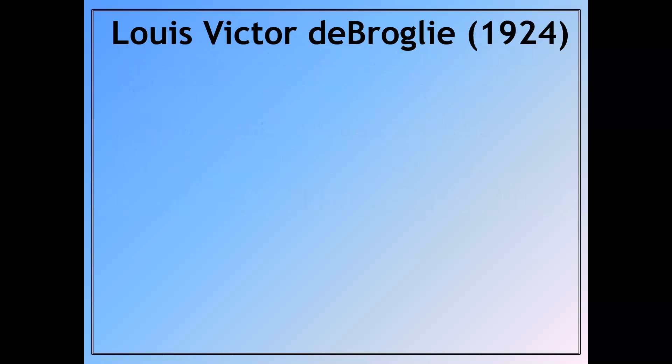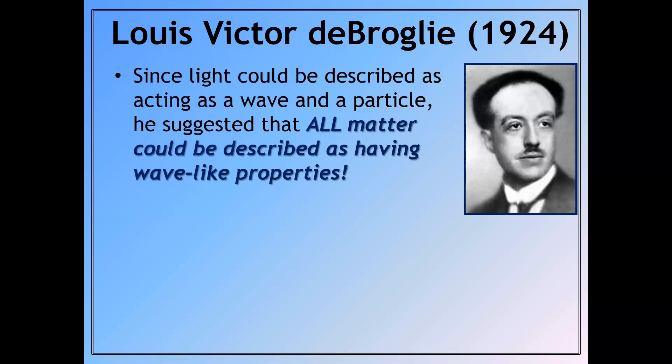So let's talk about de Broglie in 1924. So de Broglie thought that since light could be described as acting as a wave and a particle, he was wondering, does that mean that matter could also have wave-like properties too?